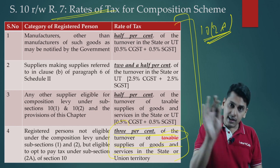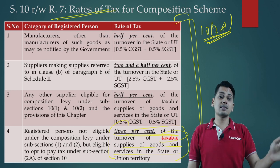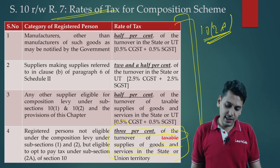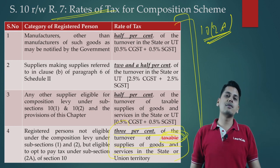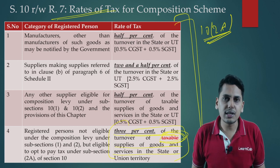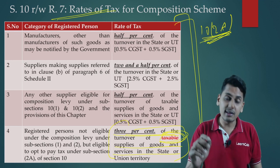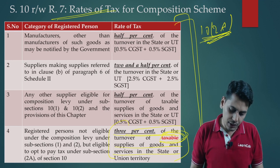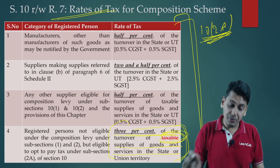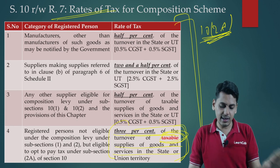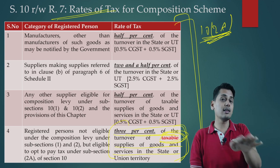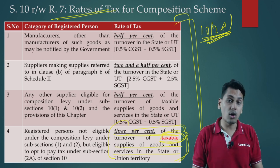Friends, it is not so. Earlier it was 'taxable supplies of goods and services,' but on the very next day a corrigendum was issued which removed the word 'taxable.' So the correct position is: the rate of tax for a composition taxable person under Section 10(2A) is 3% of turnover of supplies of goods and services in the state or union territory. The lectures are now updated and this error has been rectified.